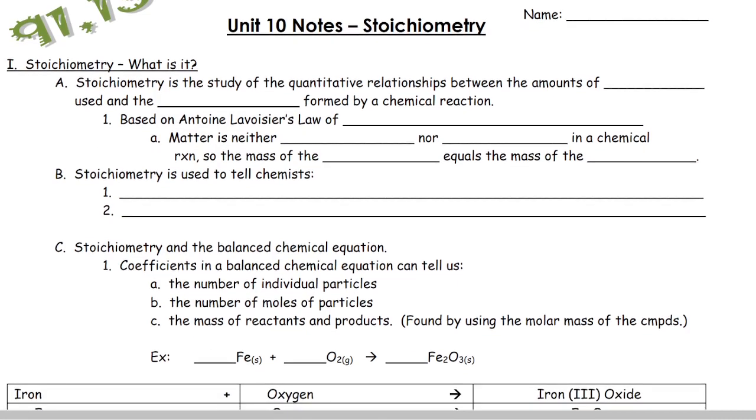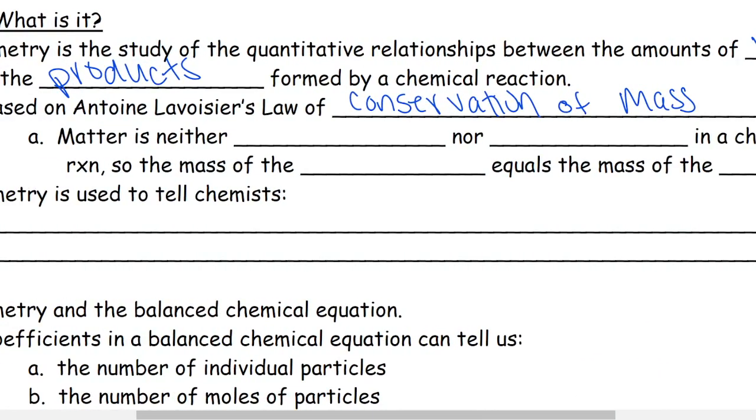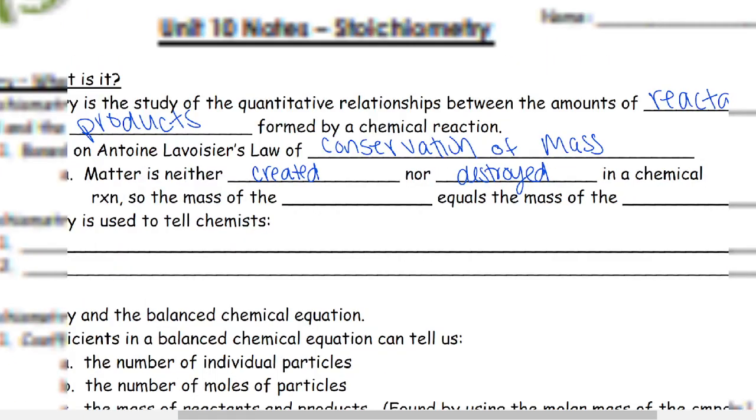Stoichiometry is the study of quantitative relationships between the amounts of reactants used and products formed in a chemical reaction. This is based on the law of conservation of mass. The law of conservation of mass tells us that matter is neither created nor destroyed in a chemical reaction, so the mass of the reactants equals the mass of our products.